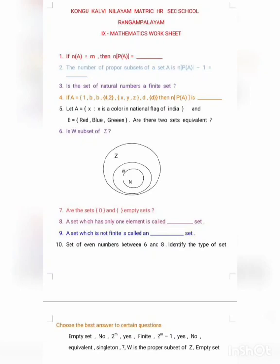Ninth one, a set which is not finite is called an dash set. Tenth one, set of even numbers between 6 and 8. Identify the type of set.